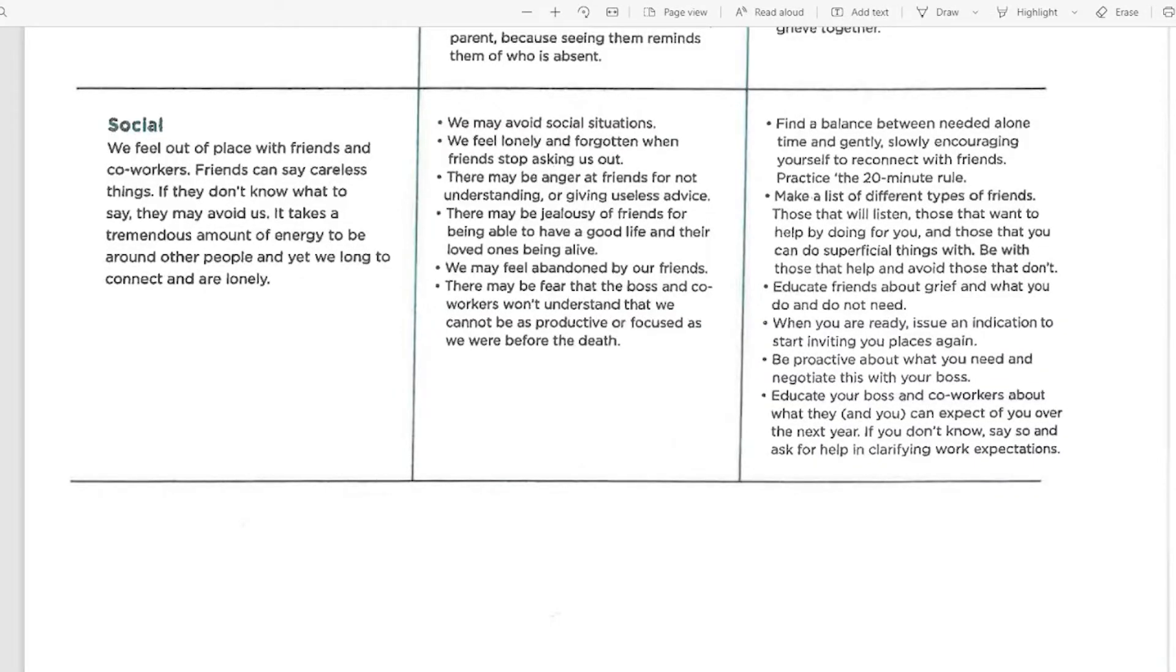And then we want to also slowly encourage ourselves to reconnect with friends by practicing the 20-minute rule. And the 20-minute rule is basically, it's something that we'll talk about a little bit later as well as the holidays are coming up, is that, okay, I can do anything for 20 minutes. So if there is a function, if there is a social situation coming up, it's something that we can tell that person that has invited us, I'm going to go. I'm going to plan on staying for at least 20 minutes. And then if you see me leave, just know that I wanted to be here, and now I need to go. And that we're grieving and that we're struggling with that balance. And that's okay.